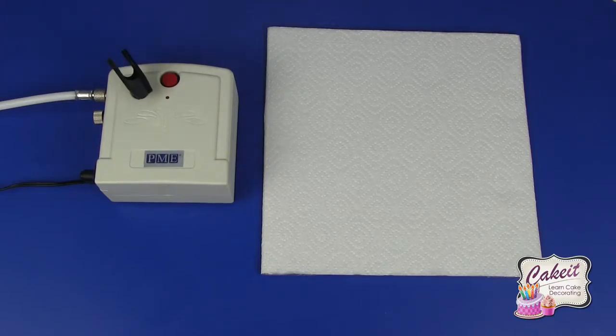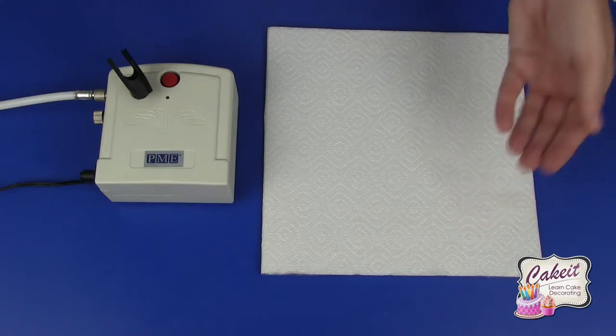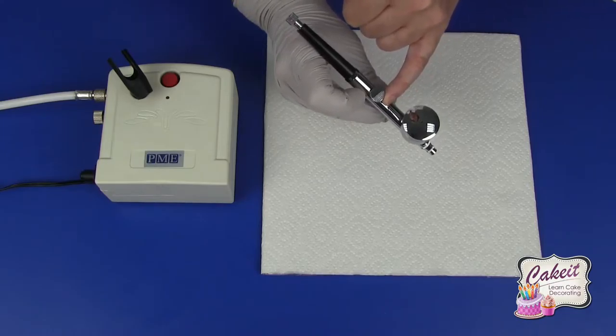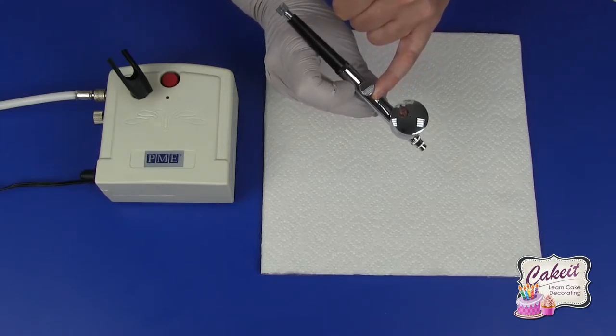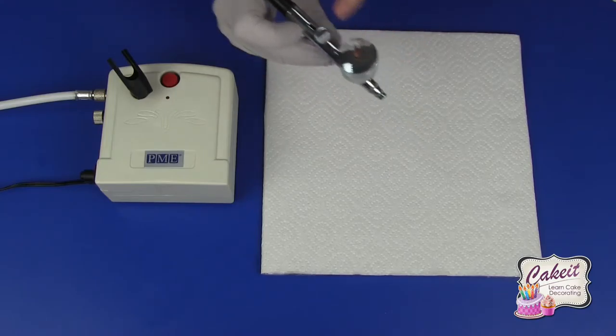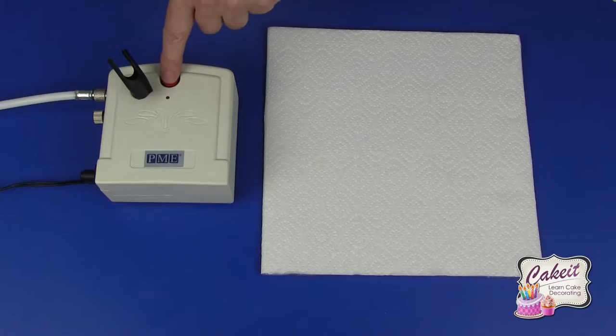So I'm actually going to switch the airbrush on and then I'm going to vary the distance from my work and also vary the pull on the lever to control the airflow. It's a good idea to practice on a piece of paper towel or card before you actually begin work on your cake. So I'm going to switch it on at the button.